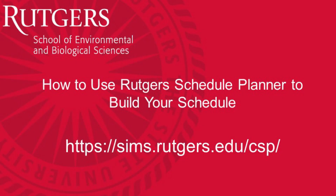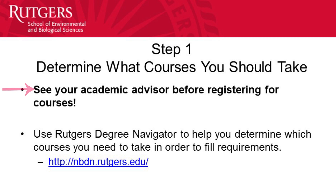Students can use Rutgers Schedule Planner to help them build their academic schedule. The first step in planning any schedule is to consult with your academic advisor. Your academic advisor can answer questions and help make sure that you're taking the right courses to fill your requirements. Rutgers Degree Navigator is another great way to determine courses that you need to take and to help you plan your schedule.